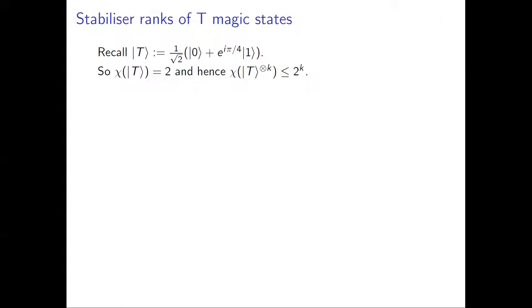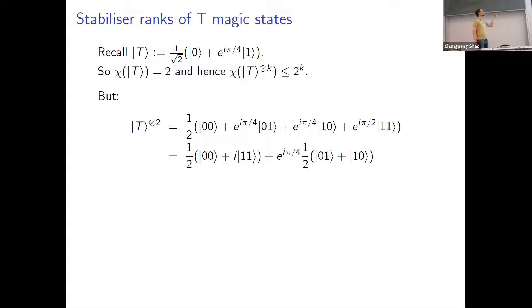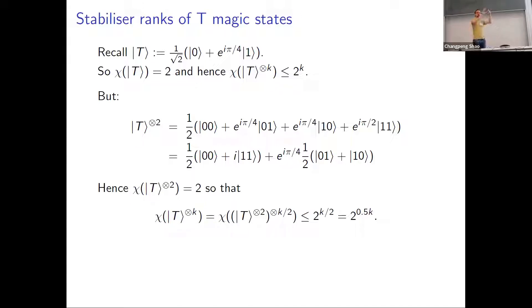How does this work? A single T magic state — |0⟩ plus |1⟩ with some phase — is already a sum of two stabilizer states: |0⟩ and |1⟩. So the stabilizer rank is exactly 2. Repeating this for every magic state gives 2^k terms. But we can do better: with two magic states, we can group terms more efficiently. Expanding in the computational basis, we get |00⟩ + i|11⟩ and |01⟩ + |10⟩, which are Bell states — and Bell states are Clifford. So the stabilizer rank of two magic states is still 2, meaning pairwise decomposition gives only 2^(k/2), i.e., 2^(0.5k).